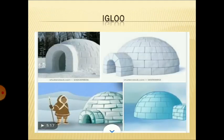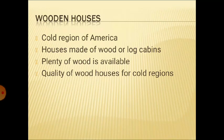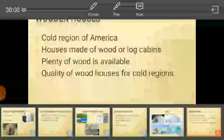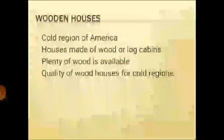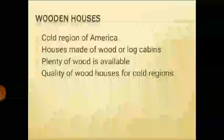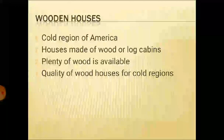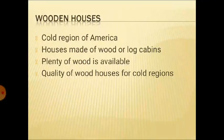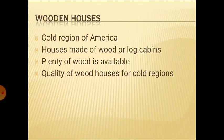Here is the picture of igloos. These are igloos — you have been drawing this picture right from class 1. Now next comes wooden houses. Wooden houses are constructed in America because these areas are very cold throughout the year and they have large forest regions also. People build wooden houses or log cabins there, using wood because there is plenty of it from the surrounding forest areas.